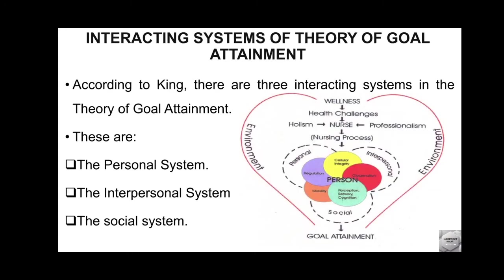Ab interacting systems of Theory of Goal Attainment — according to King there are three interacting systems: personal system, interpersonal system, and social system. You can see the diagram, and you can also draw it in your exam.